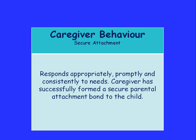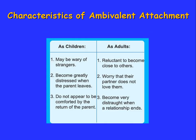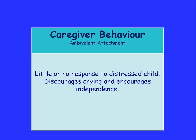However, some caregiver styles differ and we get different forms of attachment. With ambivalent attachment, as children we may be wary of strangers and reluctant as adults to become close to others. As children we become greatly distressed when a parent leaves, and as adults we may worry that our partner does not love us. The caregiver behaviour that generates ambivalent attachment is one where the caregiver gives little or no response to a distressed child, discourages crying and encourages independence.